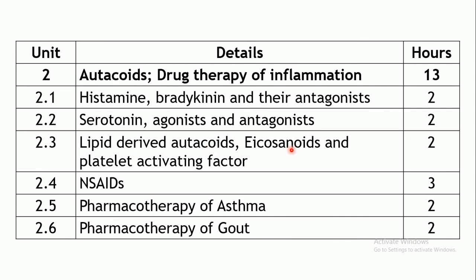Under eicosanoids you will study prostaglandins, leukotrienes, and thromboxanes, as well as platelet-activating factor. These lipid-derivative autacoids will be studied along with their pharmacological actions, pathophysiological roles, receptors, and their agonists and antagonists. Two hours are allotted. The next chapter is NSAIDs — non-steroidal anti-inflammatory drugs.